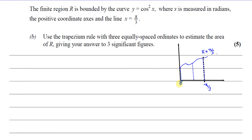When they talk about ordinates, they're talking about the lines that go up — this is the Y ordinate, that's the X ordinate. Together they give you the co-ordinates. So the X ordinates start at zero and go to pi over 3, and the spacing is pi over 3 divided by 2, which gives us pi over 6.